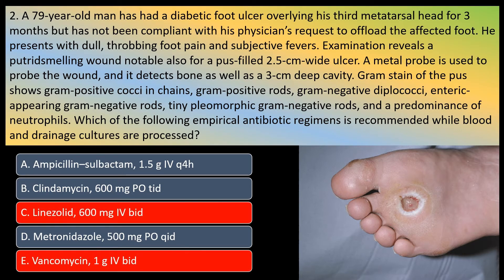In this case, the gram stain is polymicrobial and the putrid smell is very specific for anaerobic organisms. The diagnosis of acute osteomyelitis is also very likely based on the positive probe-to-bone test and wide ulcer. Broad spectrum antibiotics are definitely indicated. However, linezolid and vancomycin cover only MRSA and Streptococcus, so these are probably not the correct choice because they would miss the gram-negative rods and anaerobic bacteria present in this gram stain.